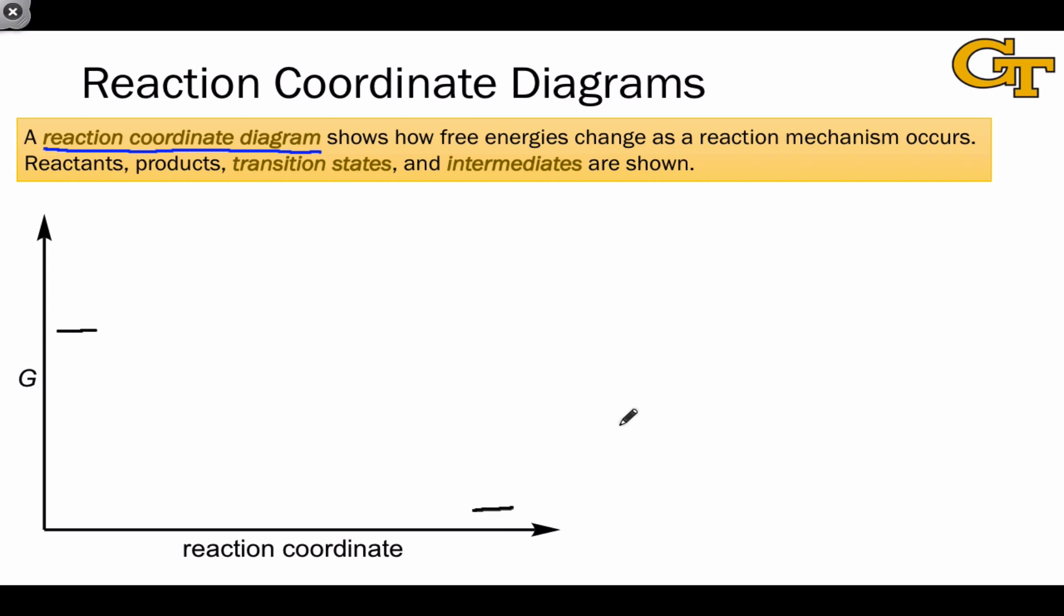But the reaction coordinate diagram doesn't just show the energies of reactants and products. It shows the energies of all species between the reactants and products, including intermediates and transition states, as the reaction occurs.